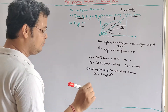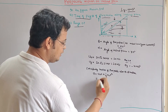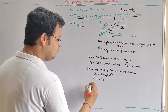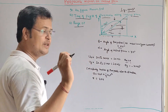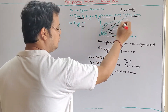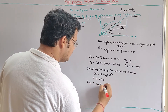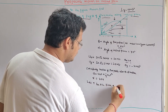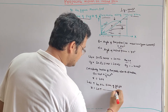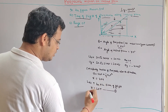Considering motion of the projectile along the x-direction: x displacement is equal to u_x into t, and u_x is 20 meters per second, so x is equal to 20t. This is the equation for horizontal displacement. Let t be the time taken by the projectile to reach from point O to point P.